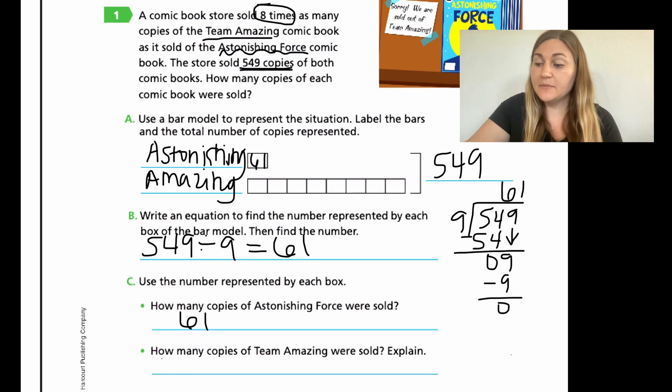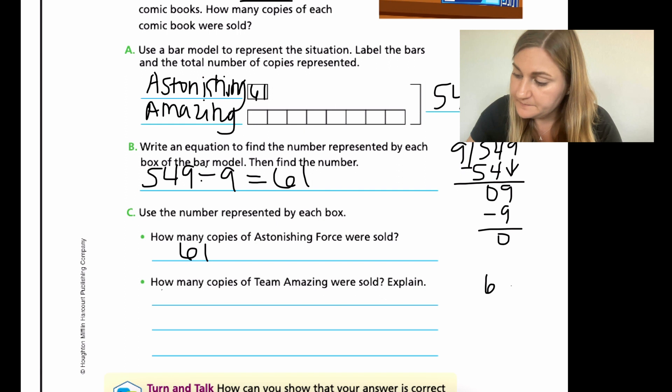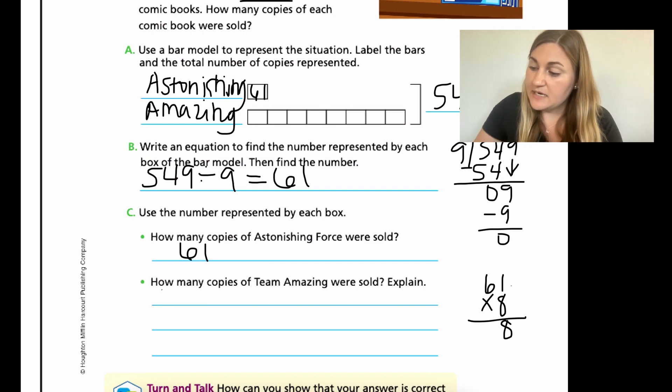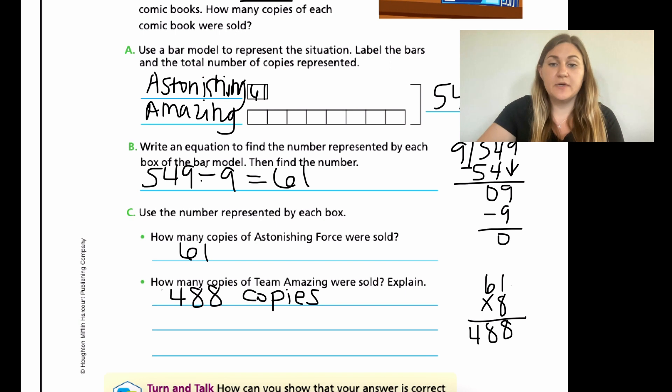The next bullet point says how many copies of Team Amazing were sold and explain. So we know that Amazing had eight of those boxes and we know that each box is worth 61. So all we need to do is multiply. So we're going to take our 61 and we're going to multiply it by those eight boxes to figure out the total. So eight times one is eight and then eight times six is 48. So Team Amazing had 488 copies. And what I want you to do on your own is explain how we got that. Explain it in your own words, but make sure you make it a complete sentence.